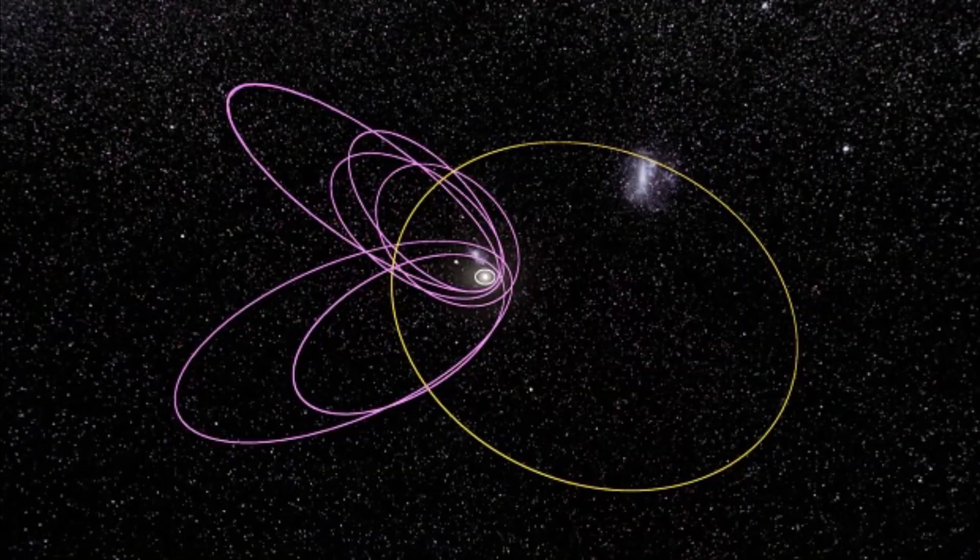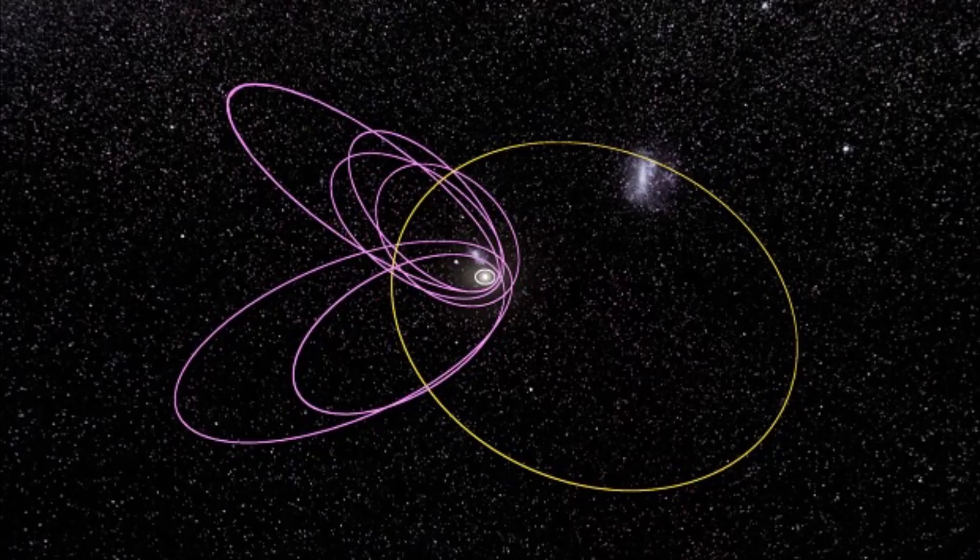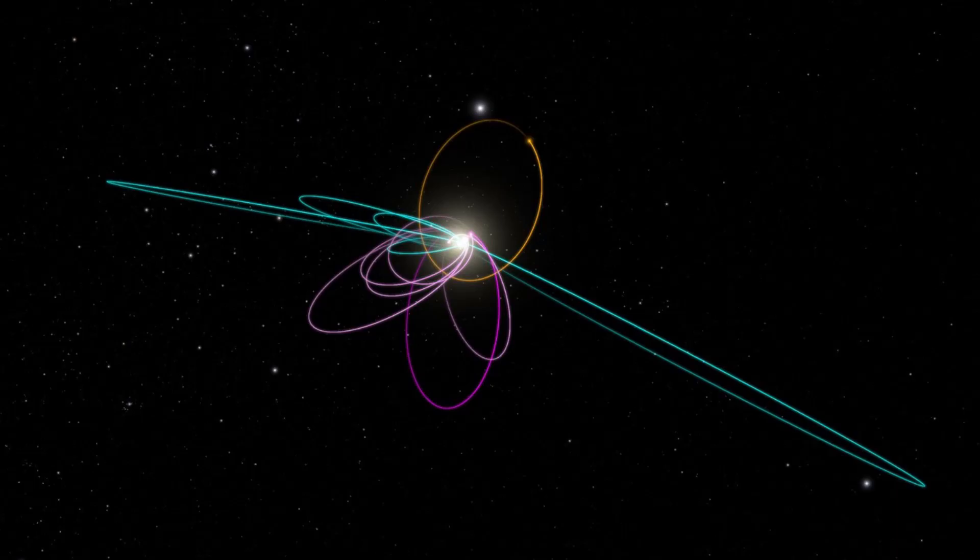A vast, elongated ellipse that carries it far beyond the realm of the known planets. This is the path Planet Nine is thought to trace around the Sun, a journey so long that a single orbit could take between 10,000 and 20,000 Earth years.